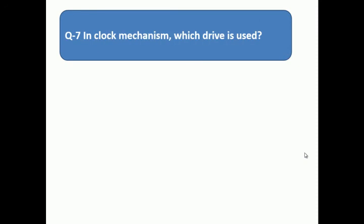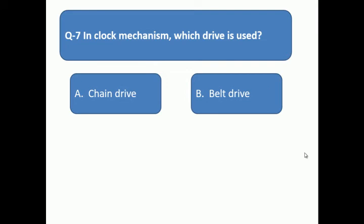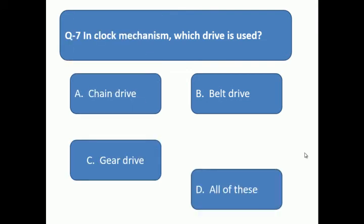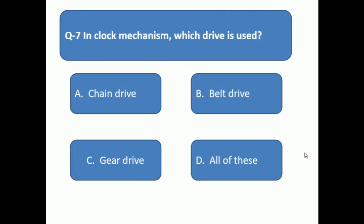Question 7: In a clock mechanism, which drive is used in clock mechanism? Which type of drive is used? A: chain drive, B: belt drive, C: gear drive, D: all of these.